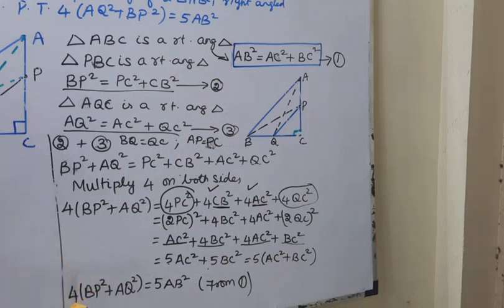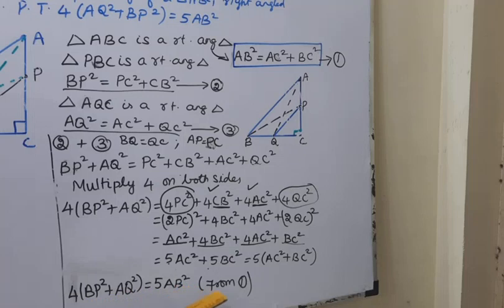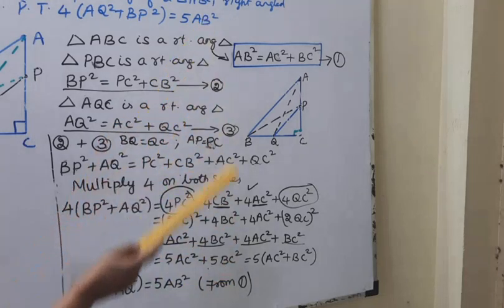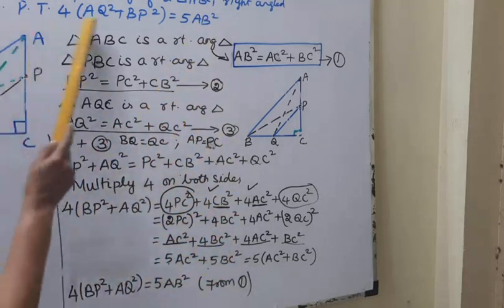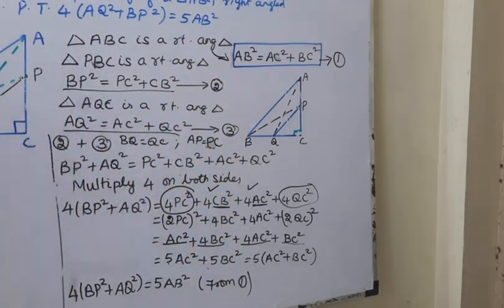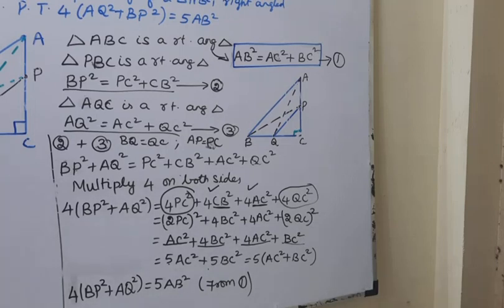From equation 1, AC square plus BC square equals AB square. So 5AC square plus 5BC square equals 5AB square. Therefore, 4AQ square plus BP square equal to 5AB square. This is the proof. Thank you students.